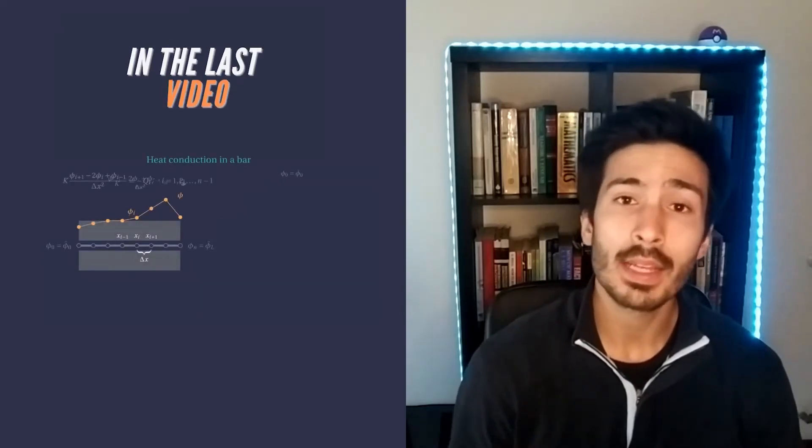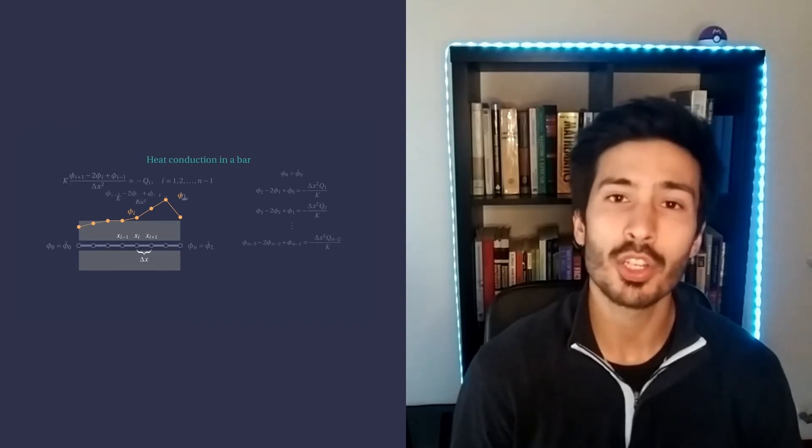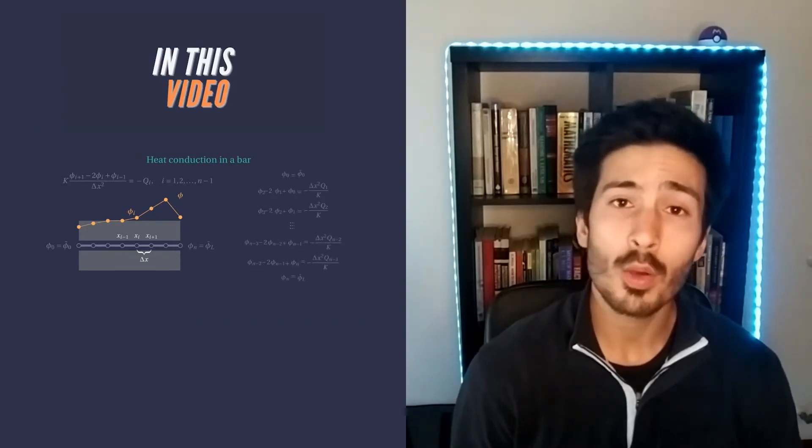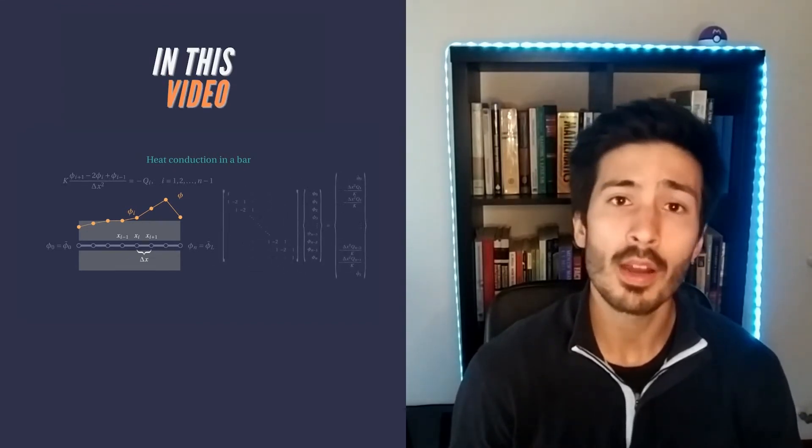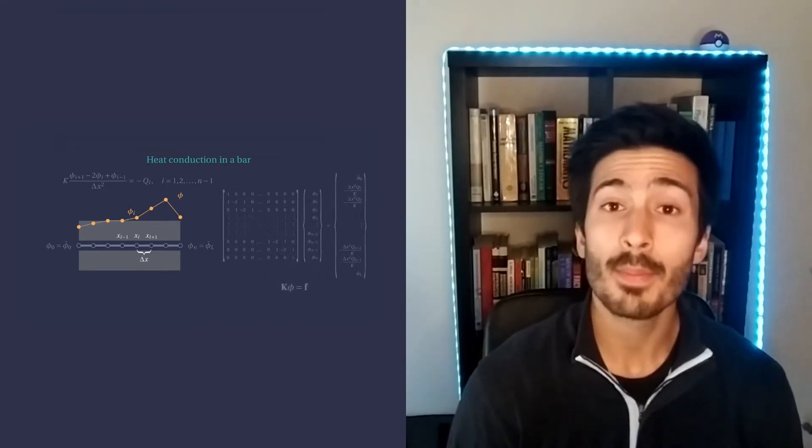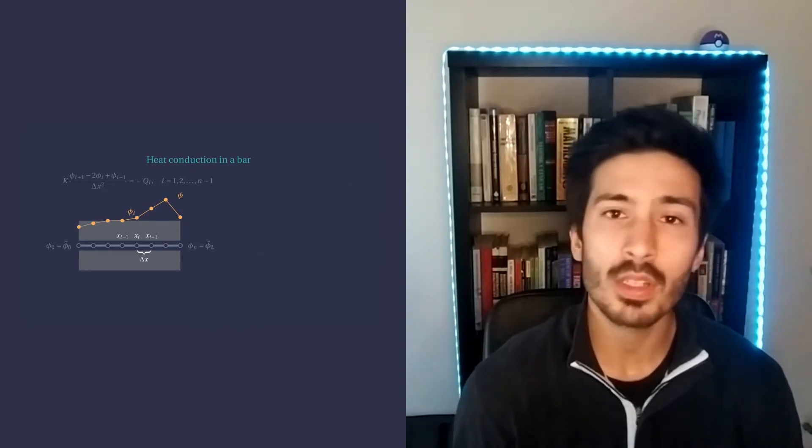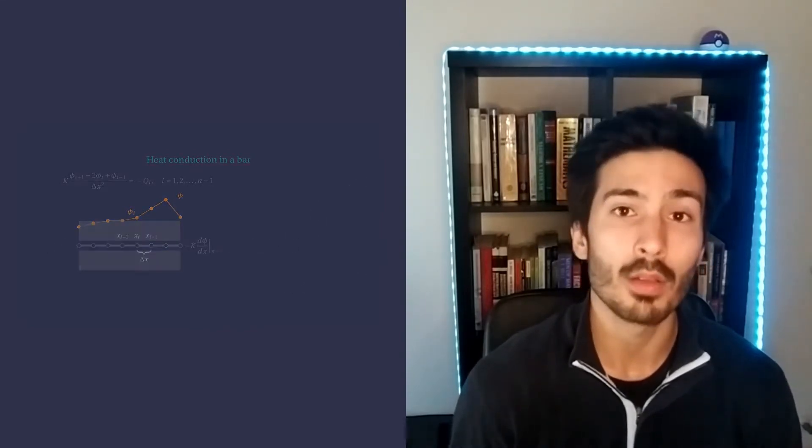In the last video we took a look at the finite differences method and applied it to a one-dimensional engineering problem. In this video we take this idea a little further and apply it to problems in more than one dimension. Perhaps the best idea is to look at a two-dimensional problem and see what new ingredients are required to solve it.